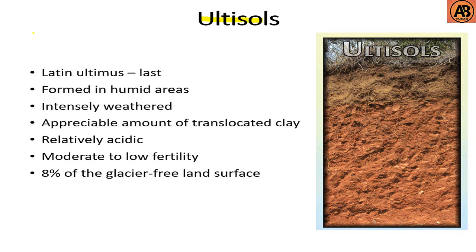Ultisols come from the Latin ultimus, meaning last. They are soils that have formed in humid areas and are intensively weathered. They have a notable amount of translocated clay and are relatively acidic. They have moderate to low fertility and occupy 8% of the glacier-free land surface.